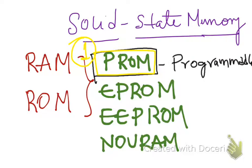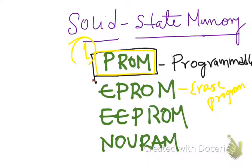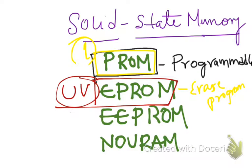And if you want to erase it, you'll just have to replace the PROM with another ROM. The next one is EPROM, which stands for Erasable and Programmable ROM, which means you can erase whatever you have programmed and you can reprogram it. But with this ROM, you need to erase it with UV light, so it is also called UV ROM. You need UV light to erase the data written into it, and then you can reprogram it.